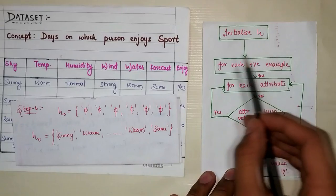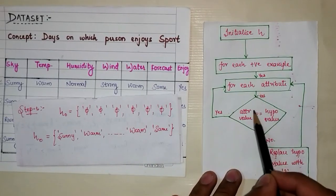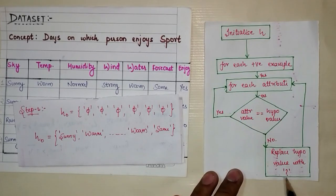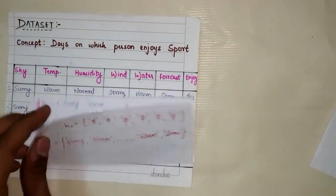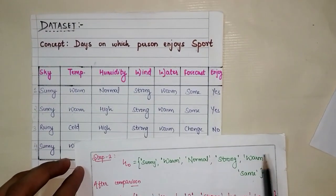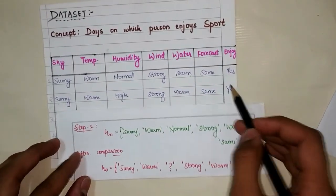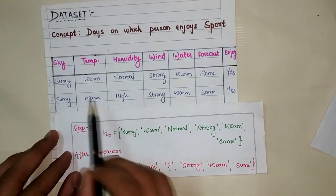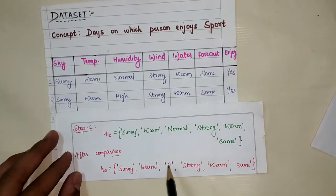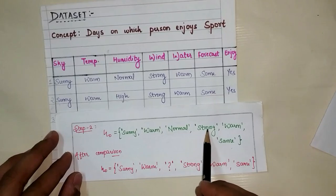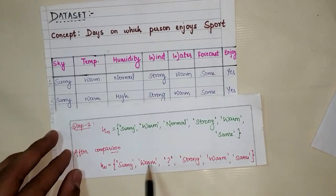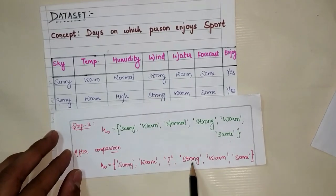The second step says for each positive example, compare each attribute to the hypothesis value. If equal, do nothing; else replace with a question mark. The current hypothesis is: sunny, warm, normal, strong, warm, same. Comparing with the second instance: sunny equals sunny, warm equals warm. But humidity is 'high' while the hypothesis says 'normal' — so we generalize it with a question mark. Strong equals strong, warm equals warm, same equals same. The new hypothesis is: sunny, warm, ?, strong, warm, same.